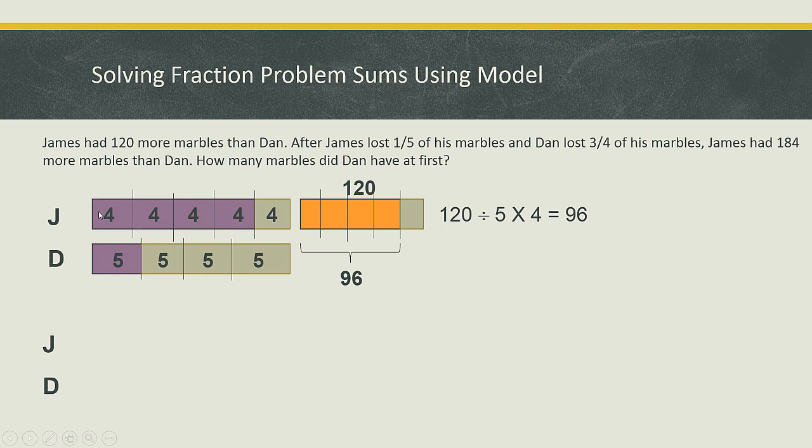For James, the leftover will be this part here, which is 16 units. And for Dan, it will be this part over here, which is five units. But what is wrong? Don't forget, for James he is also left with the orange part here, which is the 96. So you've got to bring the 96 down here also.